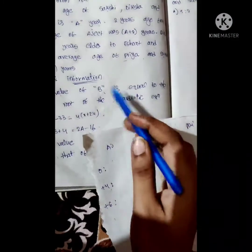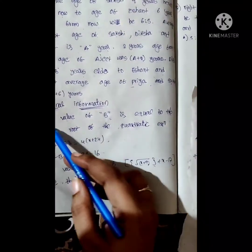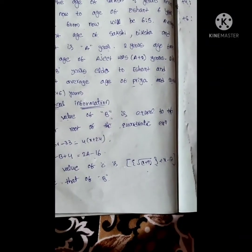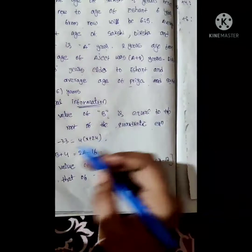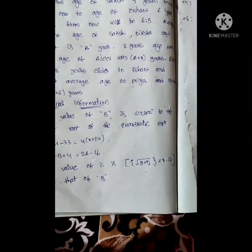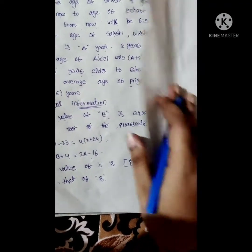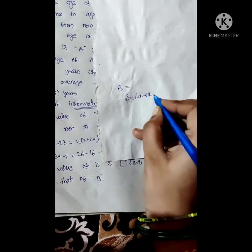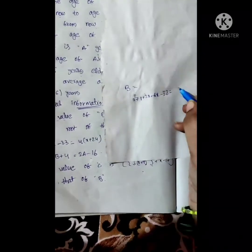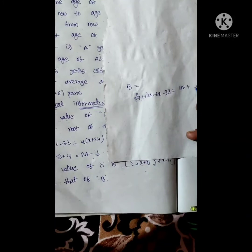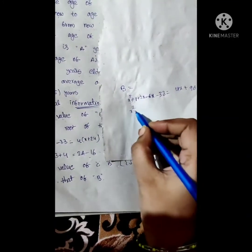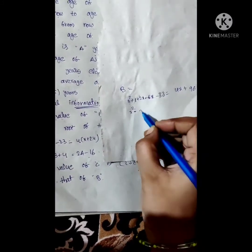To find the value of B, we use the given quadratic equation. The equation is: x² + 2x − 66x − 33 = 4x + 96, which simplifies to x² − 4x − 8x plus terms, giving us a quadratic to solve.